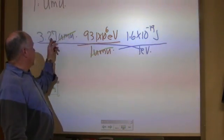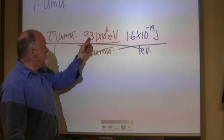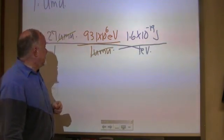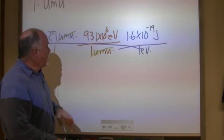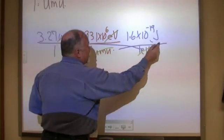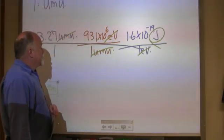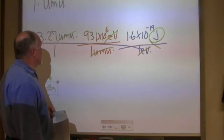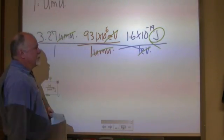So 3.27 times 931 times 10 to the 6 times 1.6 times 10 to the negative 19. And I'm left with EVs cancel out, I'm left with joules. And so it seems like a complex problem, but they're relatively straightforward. We just look up our conversion factors, and this was given to us originally.